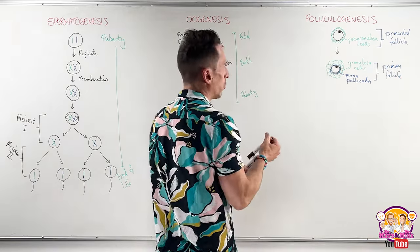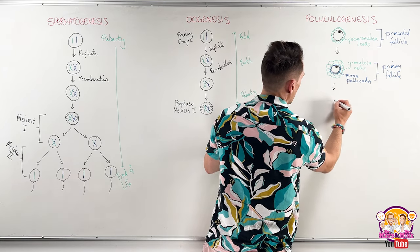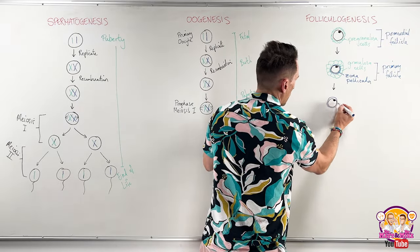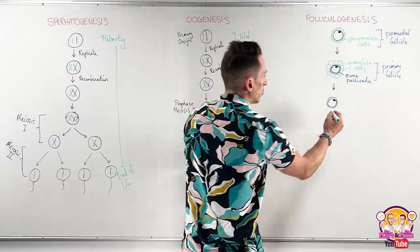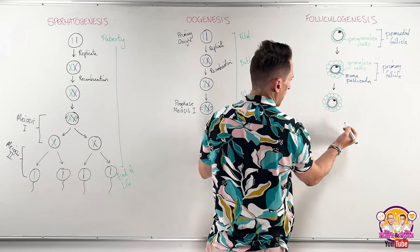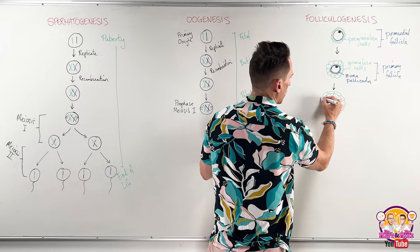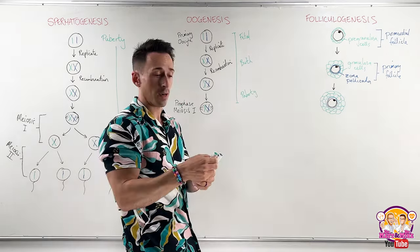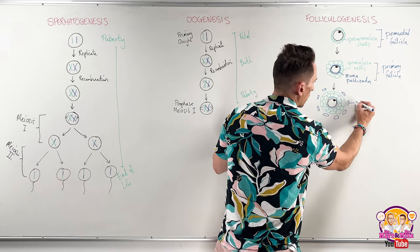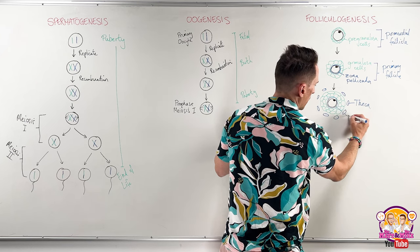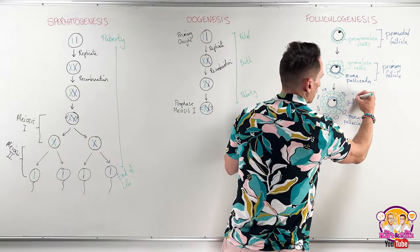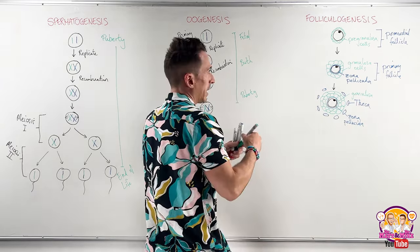A primary follicle will also mature into a secondary follicle. The oocyte gets slightly bigger, the zona pellucida is still present, and the granulosa cells start to develop a few more layers — around about two layers of granulosa cells. In addition, another cell type starts to develop on the outside called theca cells.